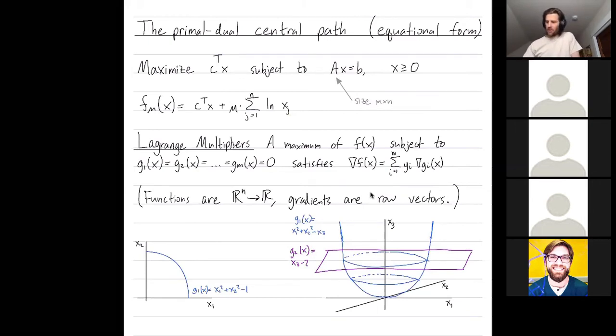And you'll remember that the central path is the path obtained of optimal solutions as you vary mu. And so when mu is large, you're sort of near the center of your feasible region, and then as you let mu go to zero, you approach the optimum that you care about.